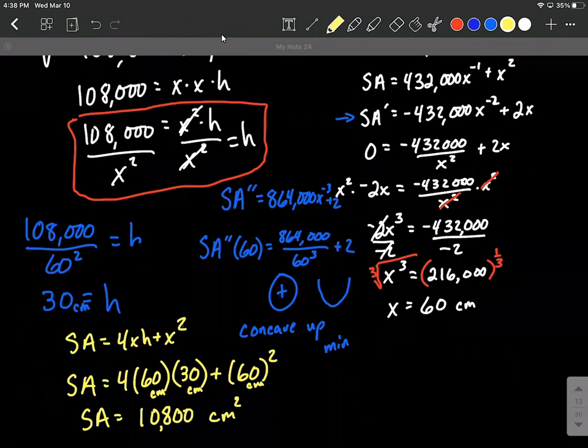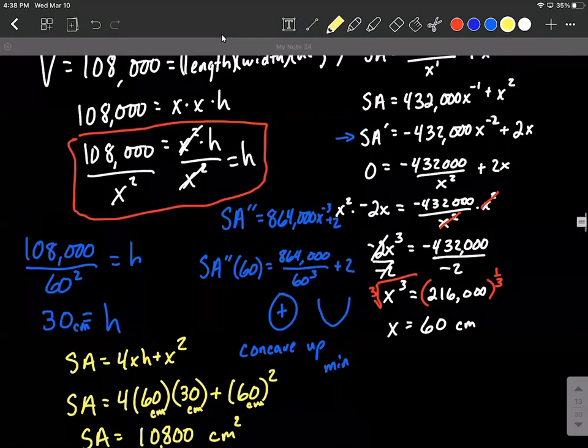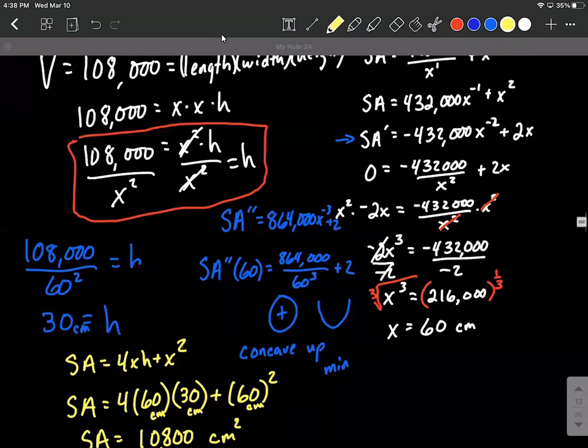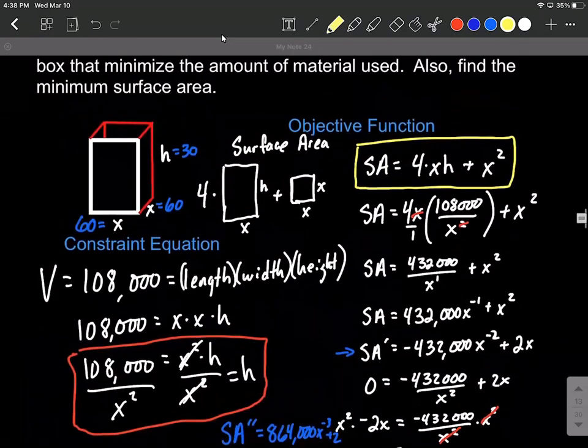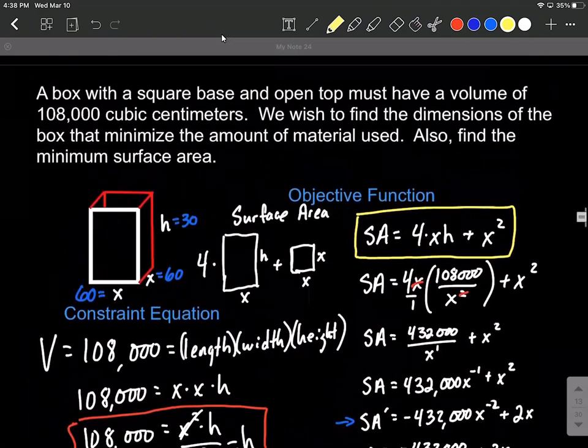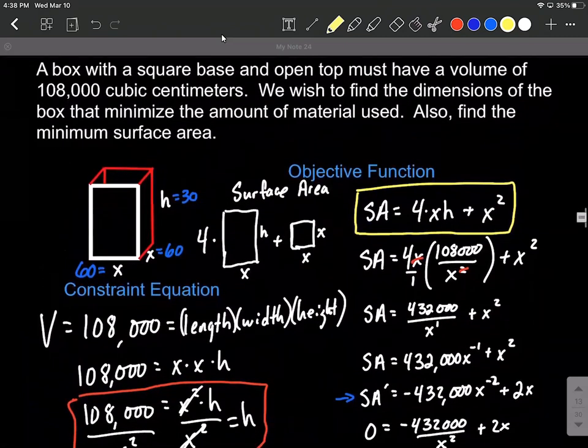All right. I hope this helps out on trying to minimize surface area. I know that these can be very challenging problems to a lot of students. Just work with it. Draw a picture. Label the sides. Always try to get a constraint equation and an objective function. The constraint equation is gonna be some number that's included in the word problem. And the objective function is whatever you're trying to maximize or minimize. It takes working with these to get really confident about it, but do your best. Keep working on it. You can do it.